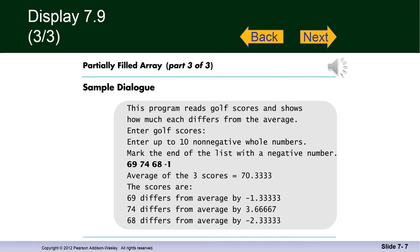Finally, we have a dialog of program 7.9 running. The user ends the input with a negative number. And in this particular run, inputs three scores: 69, 74, and 68. And although that array that stores these numbers can hold up to 10 positive numbers, we're only using three. So number_used will obviously be three in this particular case.